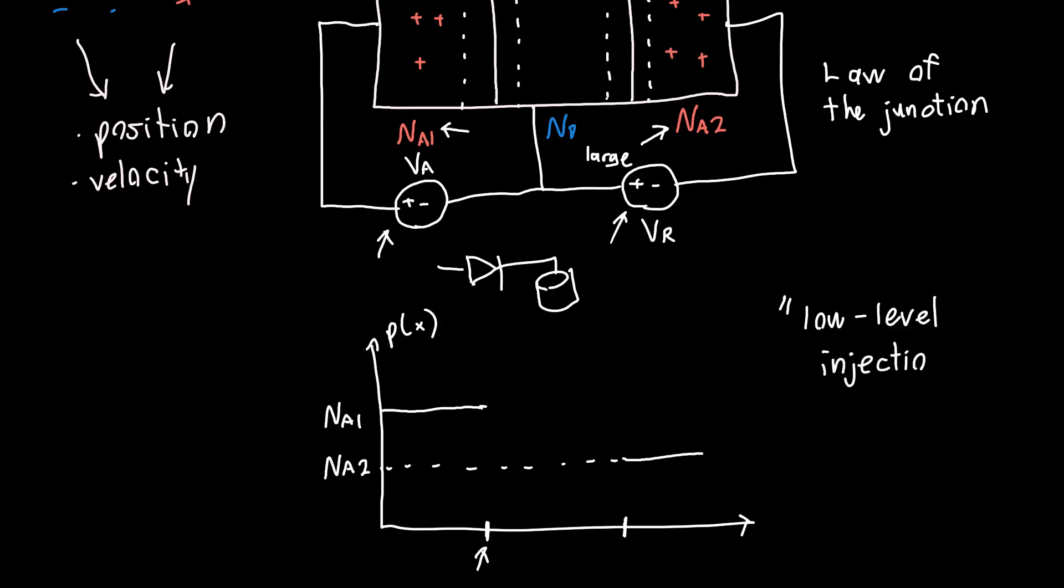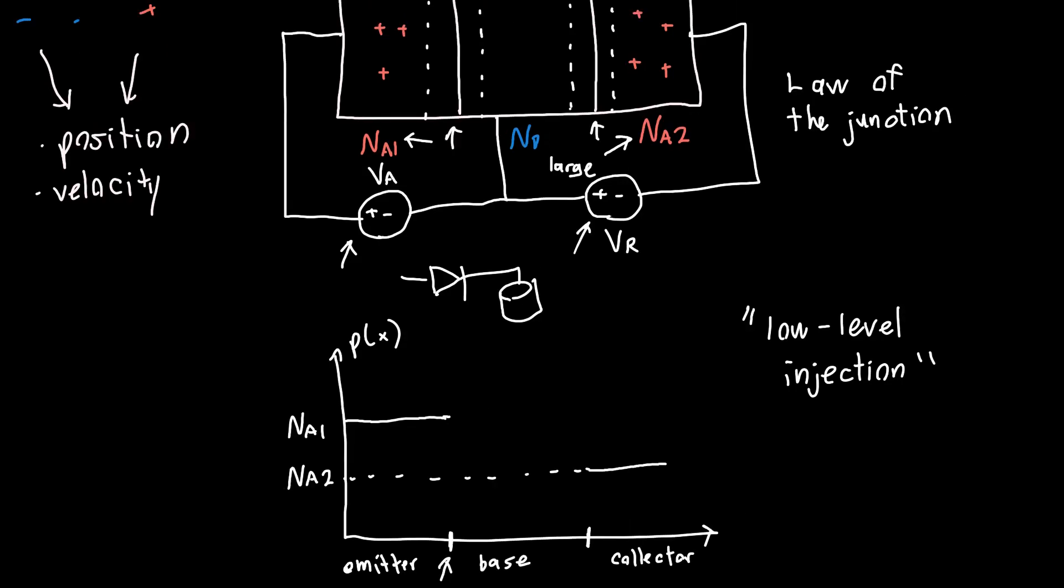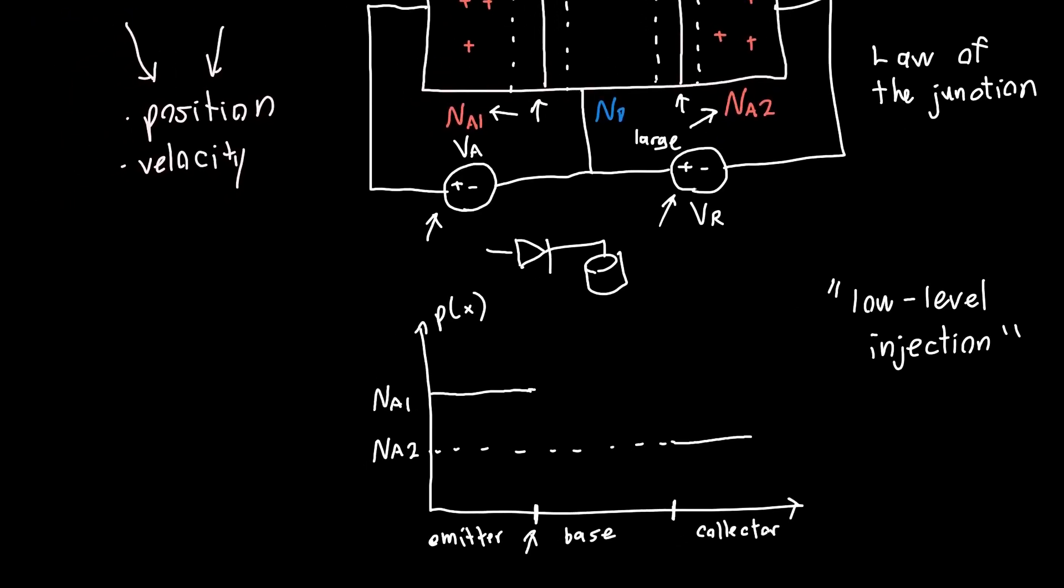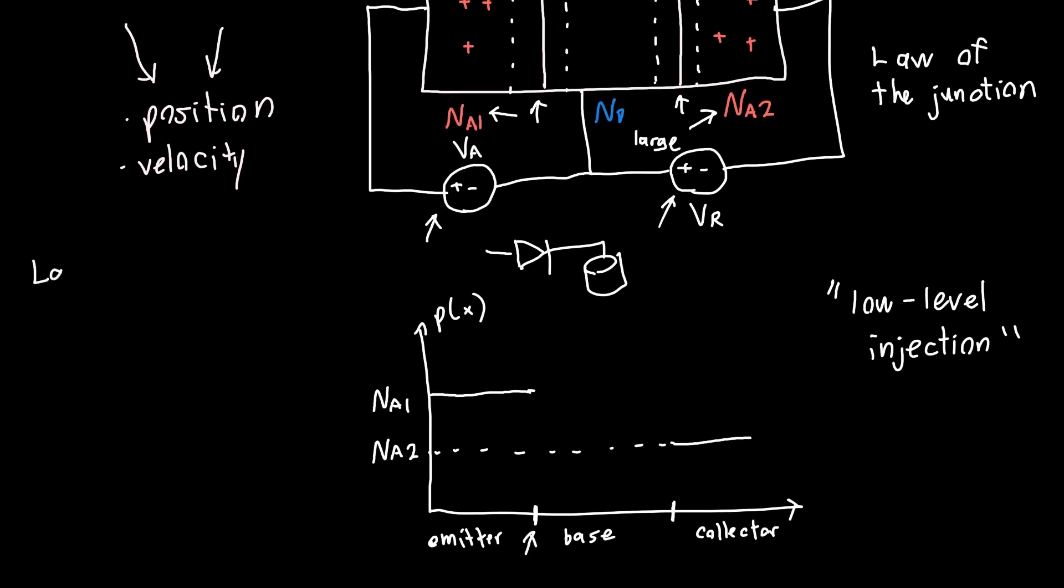And it makes the analysis a whole heck of a lot easier. So this is the emitter region. This is the collector region. And this is the base. And so now we just need to figure out what's going on in the base. And so to do that, we're going to apply the law of the junction.